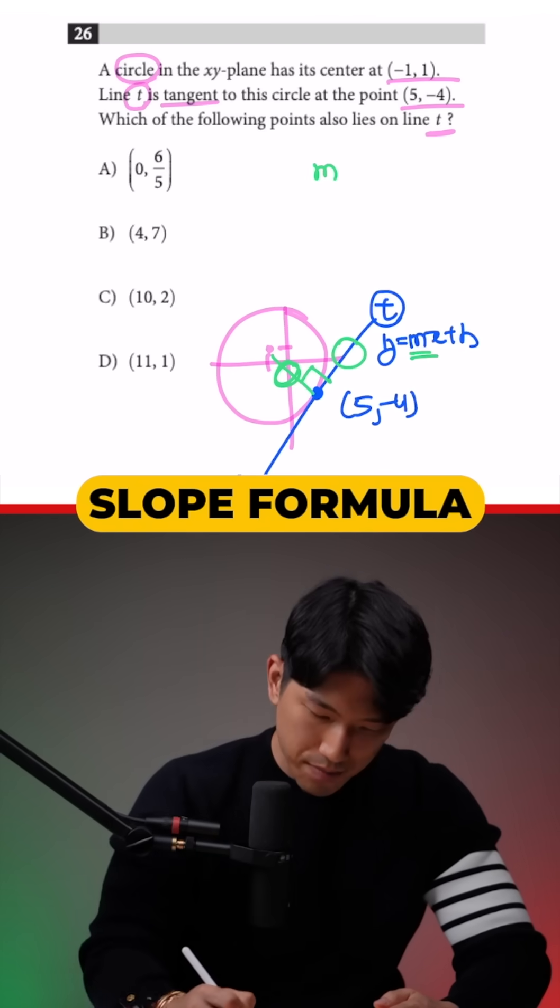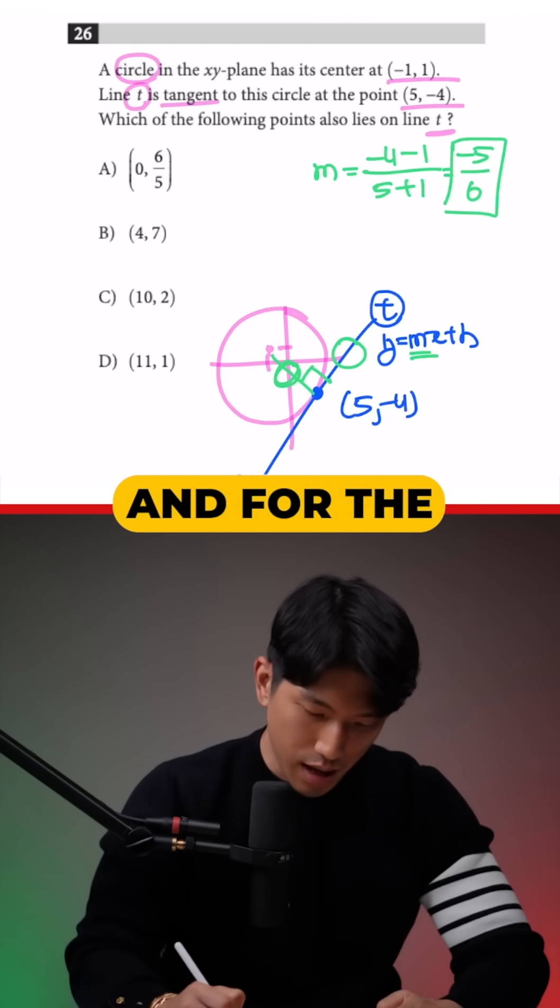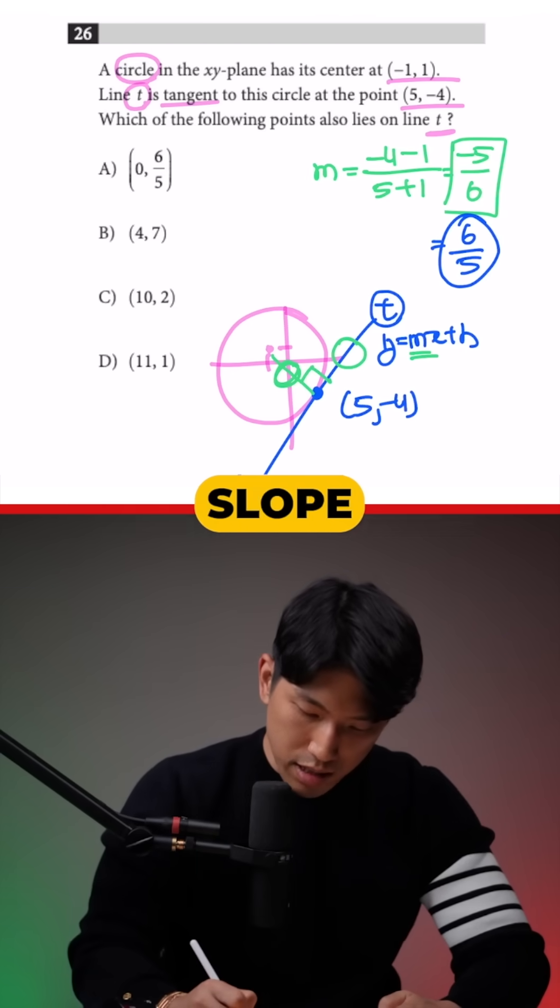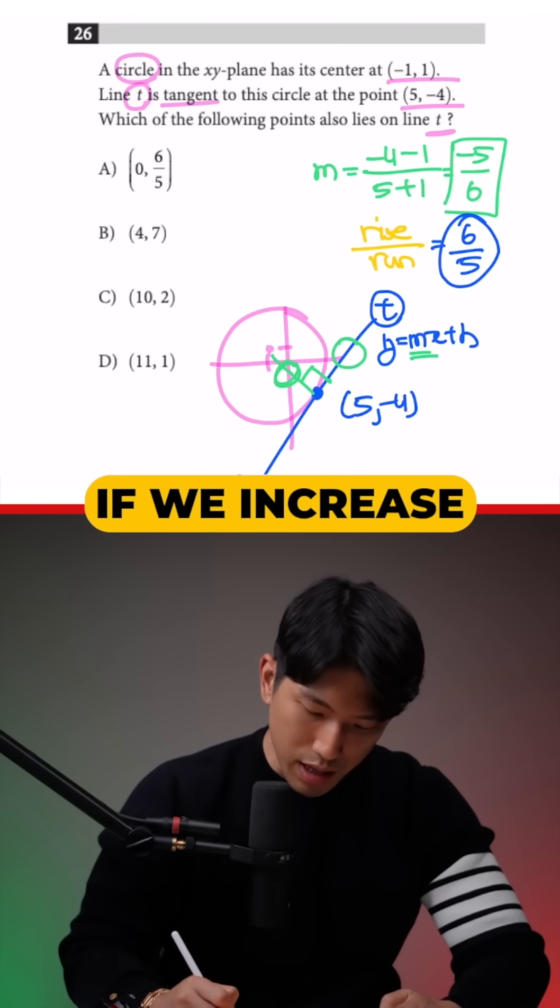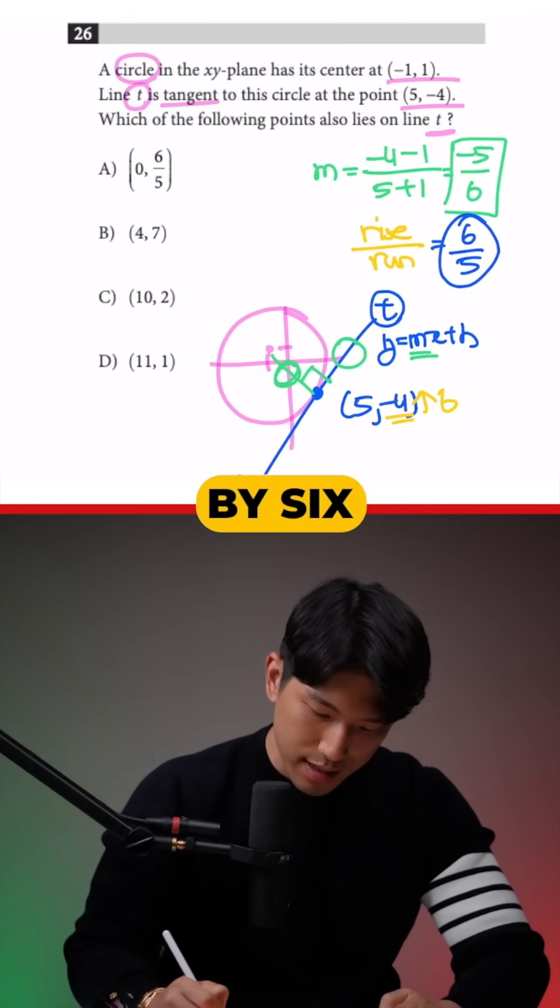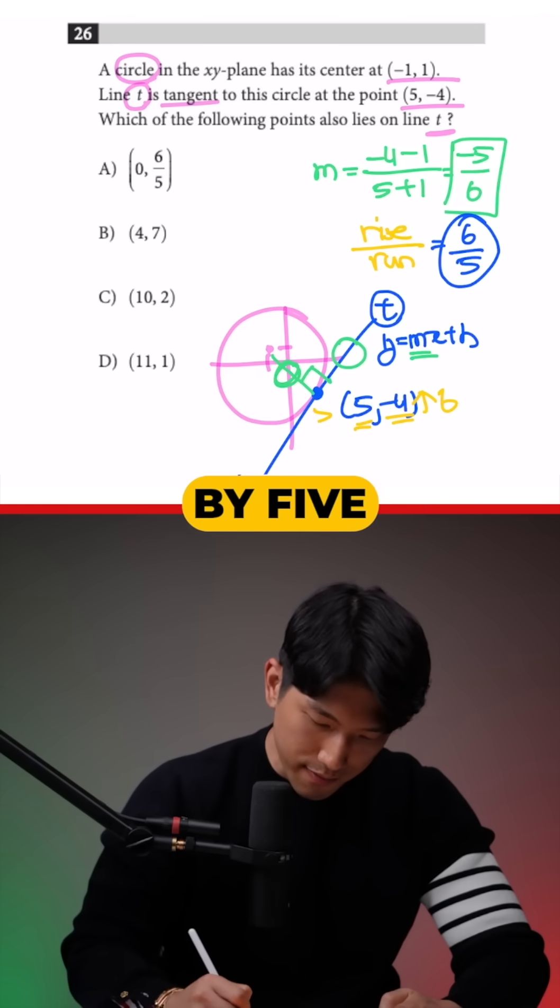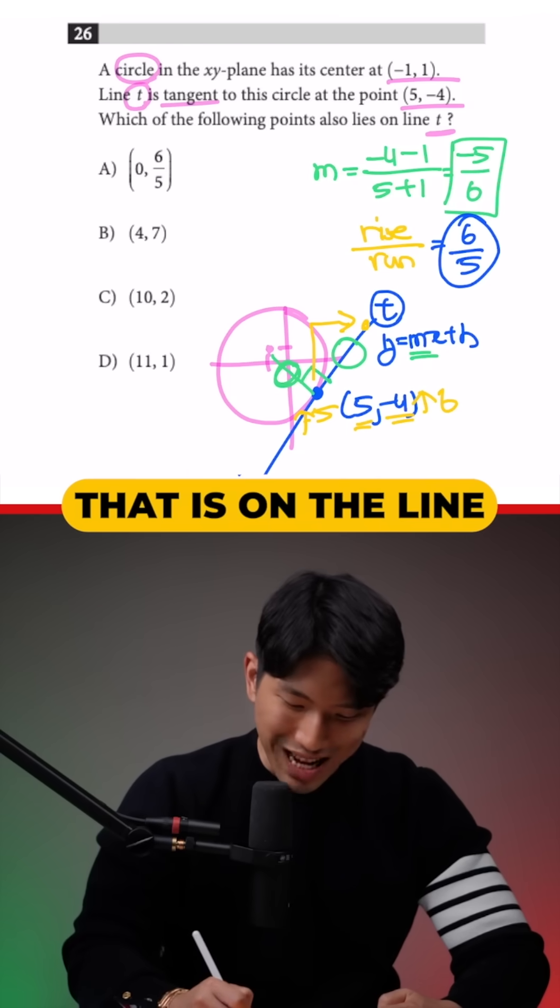If we use the slope formula, that's the slope of the radius. For the perpendicular line, because slope is essentially rise over run, if we increase the Y coordinate by six and run the X coordinate by five, we know that's going to be another point that is on the line.